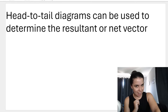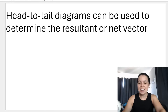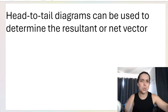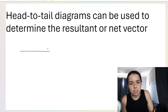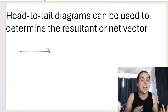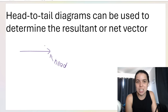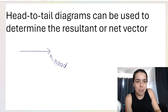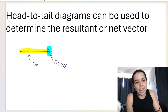Why do we need to use a head to tail diagram? It's one method we can use to determine the net vector. When we draw a vector graphically, the arrow has two parts. This part over here is called the head, and this part over here is called the tail. So we've got a head and a tail.